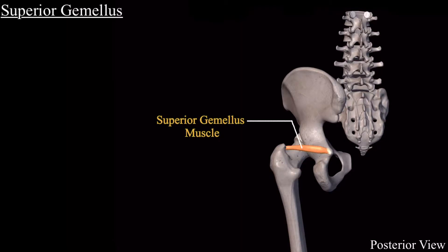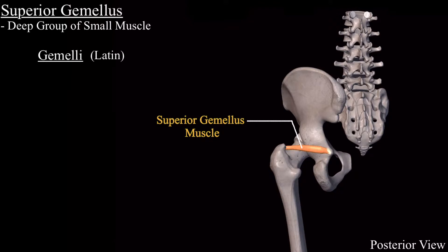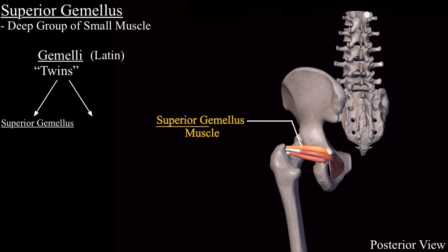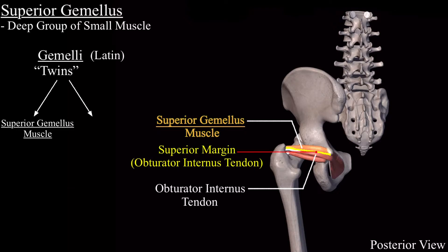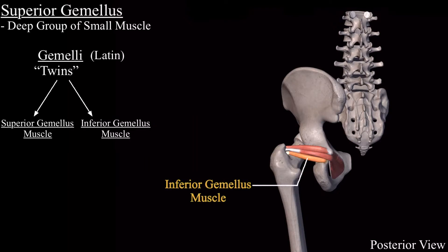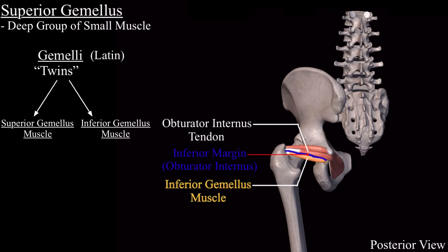The superior gemellus muscle is one of the deep group of small muscles. The word gemelli is a Latin word which means twins. There are two gemellus muscles: the superior gemellus muscle, which is present along the superior margin of the obturator internus tendon, and the inferior gemellus muscle, which is present along the inferior margin of the obturator internus tendon. Both the superior and inferior gemellus muscles are triangular shaped muscles.